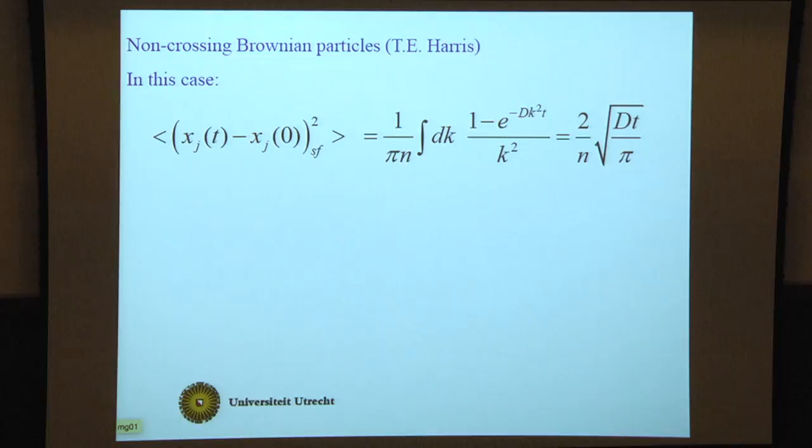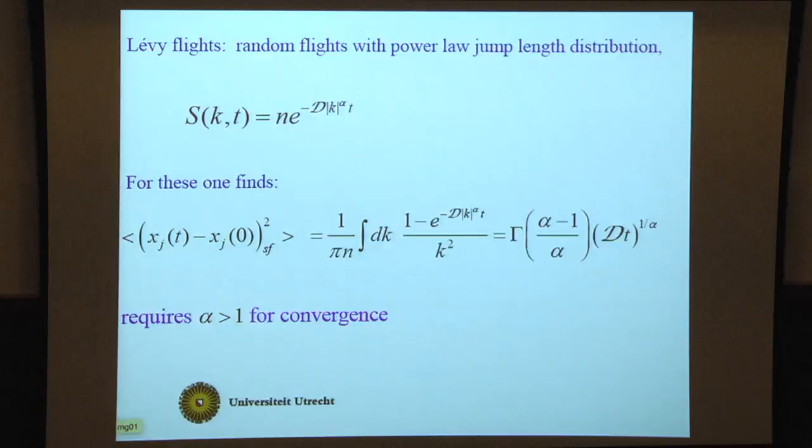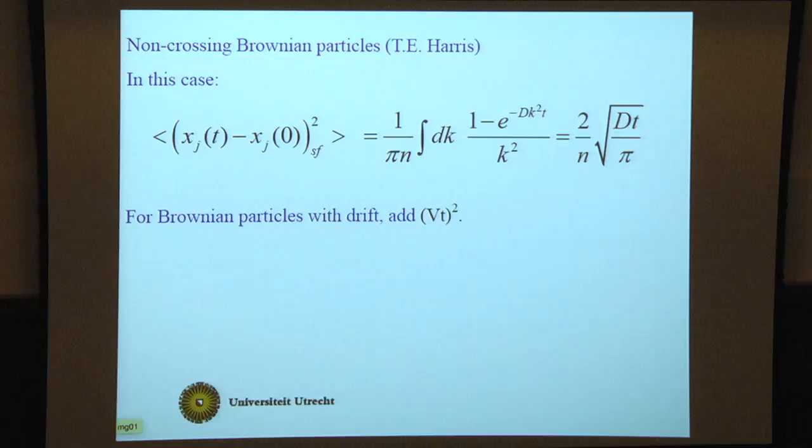Non-crossing Brownian particles, considered first by Harris. In this case you get 1/πn integral dk (1 - e^(-Dk²t))/k², which is the structure function for a single particle. This gives you square root of t for the mean square displacement, a very well-known result. If the Brownian particles have a drift, you just add the average drift speed times t squared.